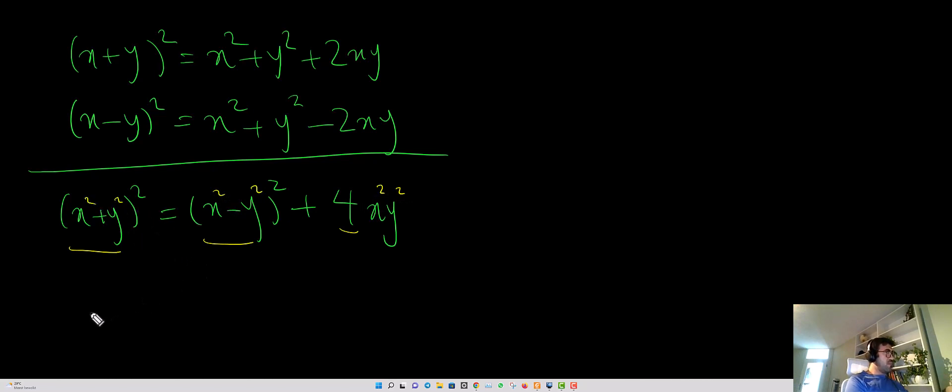And now you have an infinite family of solutions for Pythagorean equations. And the theorem that I was talking about is saying that every solution for Pythagorean equation, a square plus b square equals c square, is in this form.